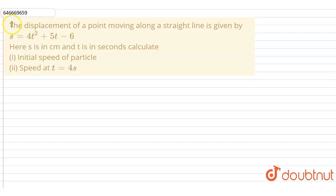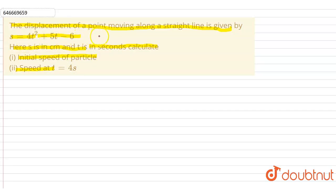Hello students, our question is: the displacement of a point moving along a straight line is given by s = 4t² + 5t - 6, where s is in centimeters and t is in seconds.